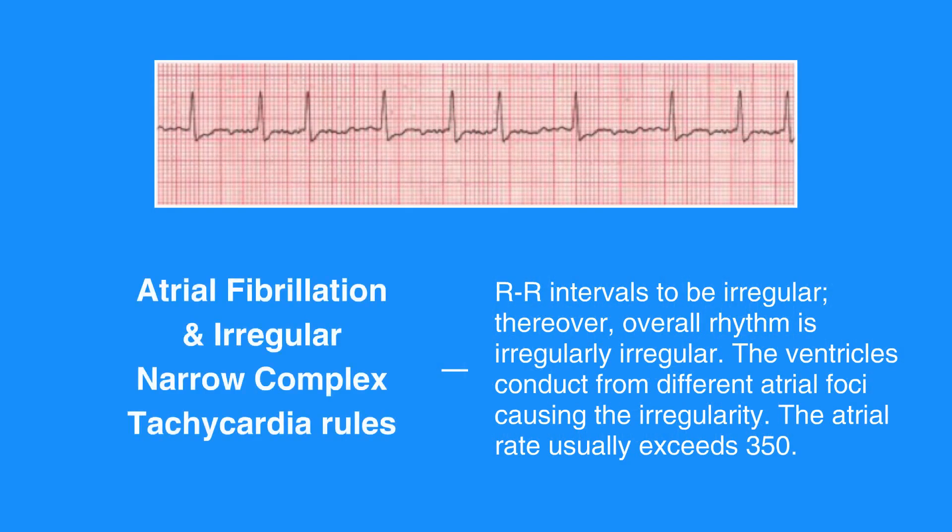The atrial fibrillation and irregular narrow complex tachycardia rules include R-R intervals to be irregular. The overall rhythm is irregularly irregular. The ventricles conduct from different atrial foci, causing the irregularity. The atrial rate usually exceeds 350.